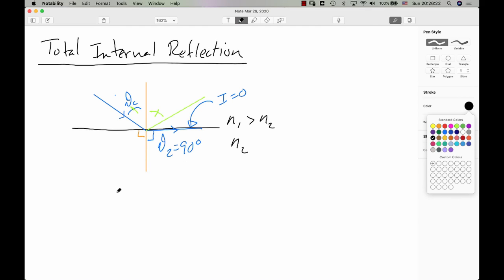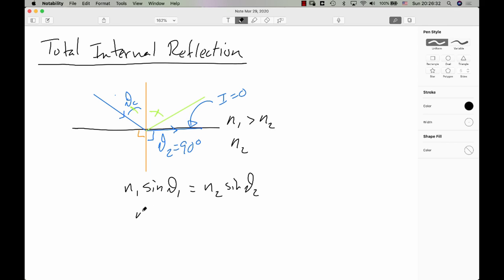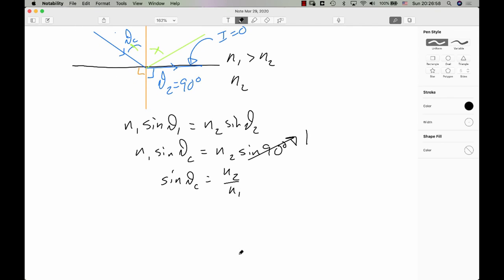Let's figure out what that angle is. We can use Snell's law: N1 sine theta 1 equals N2 sine theta 2. In this case, our theta 1 is our critical angle, and our theta 2 here is going to be 90 degrees. The sine of 90 degrees is 1. So we can write that the sine of the critical angle is N2 over N1. And the critical angle then is the inverse sine of N2 over N1.